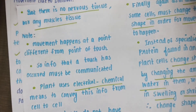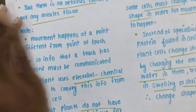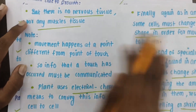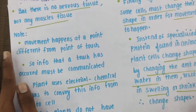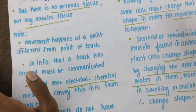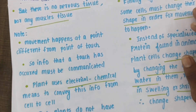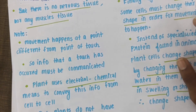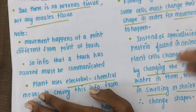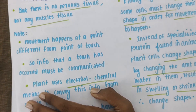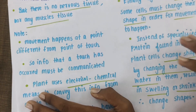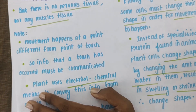Plants do not have nervous tissue or muscular tissue. So how does this movement happen? In our bodies, sensory fibers reach the brain, then there are motor fibers, then muscles. Because of proteins in the muscles, there is a change in the shape of the cells, which quickly contracts the muscles. But in plants there are no muscles.